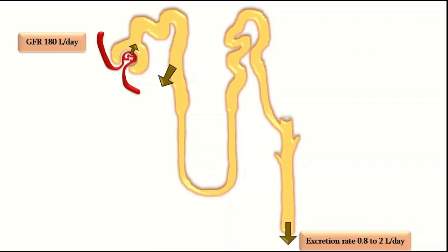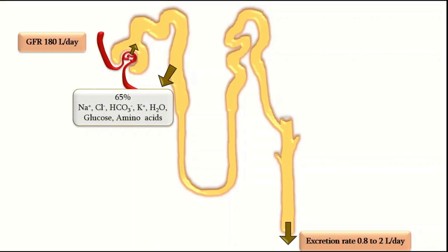Let's see the selective reabsorption and secretion of various substances in different parts of the nephrons. In the proximal convoluted tubule, substances reabsorbed include sodium, chloride, bicarbonate ions, potassium ions, water, glucose, amino acids, phosphates and other substances. Almost 65 percent of the proximal filtered load is reabsorbed by the proximal convoluted tubule. Substances secreted into the proximal convoluted tubule include hydrogen ions, organic acids and bases — for example, para-aminohippuric acid.